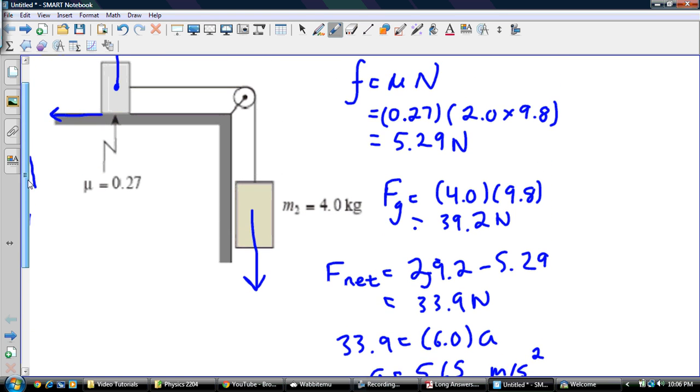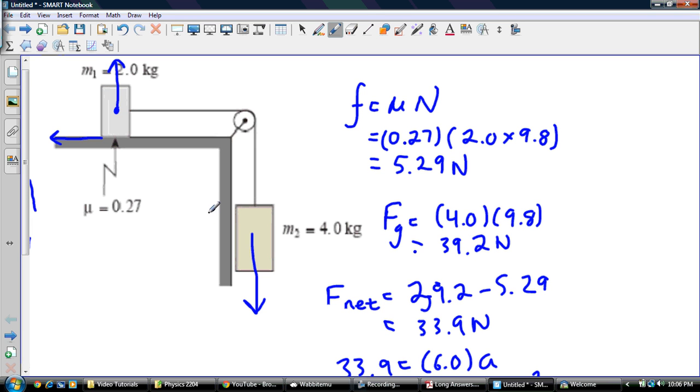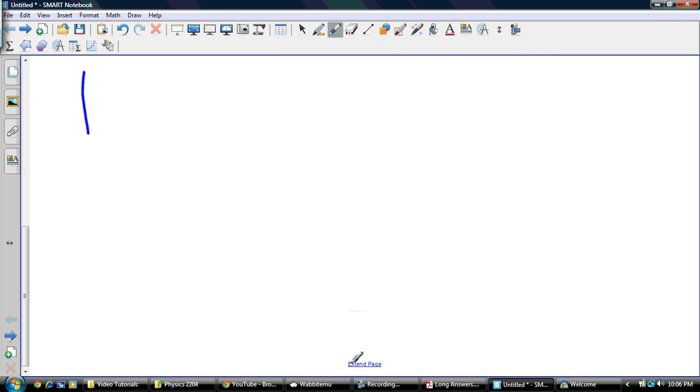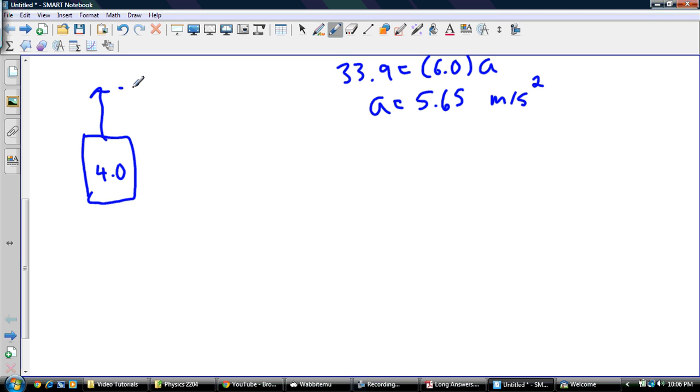So now we want to find the tension in the string. So tension in the string, you choose one of your masses. Generally we normally would choose this one just because that's what we used to go with. It doesn't matter. So I'm going to choose that 4 kilogram mass and I'm going to draw a free body diagram for it. So that's 4 kilograms. I got some tension force here acting this way and some force of gravity acting this way. So we know it's moving this way. It has some acceleration that way. Remember, the acceleration is the same for both masses.